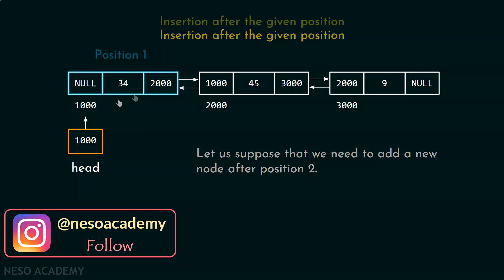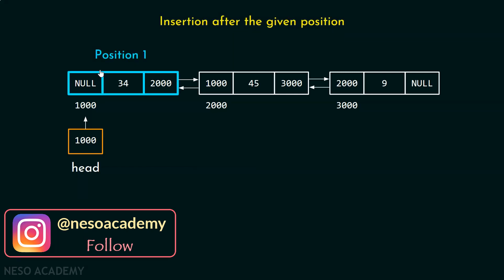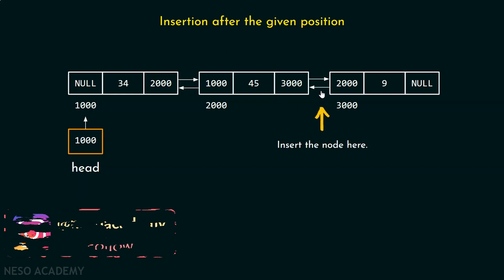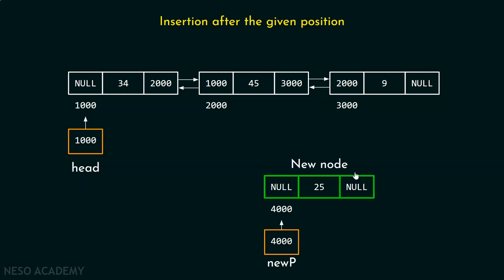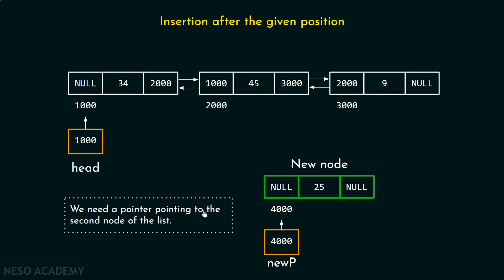I am assuming here that this is position one and this is position two, and our target is to add a new node at this point. For this purpose, we need a new node, and there must be a pointer pointing to this node so that we can reference it. We also need a pointer pointing to the second node of the list so that we can do the updates.